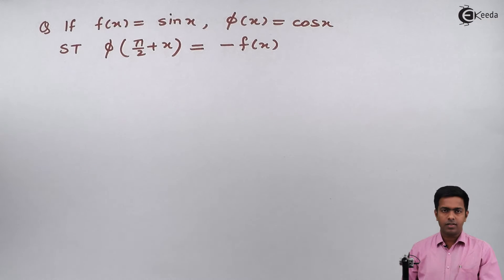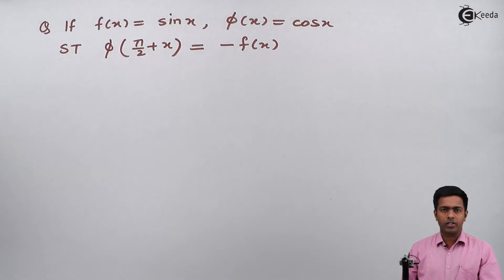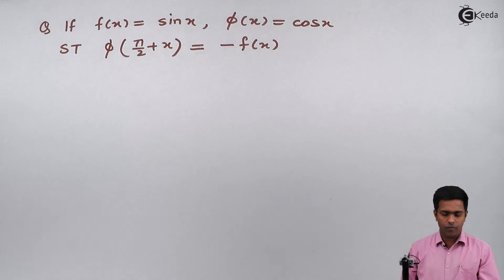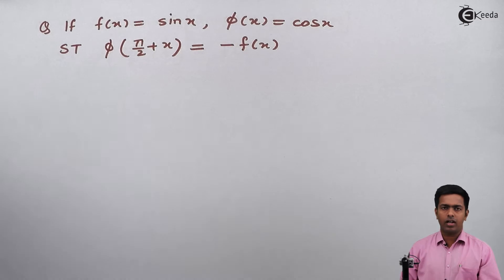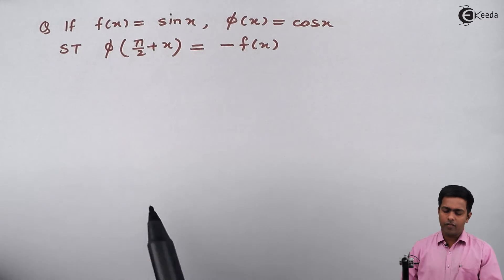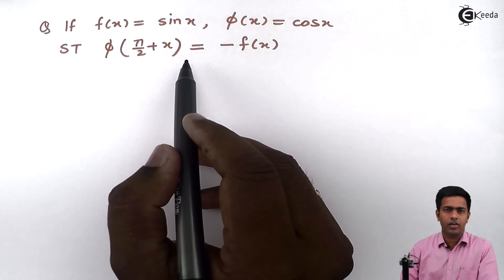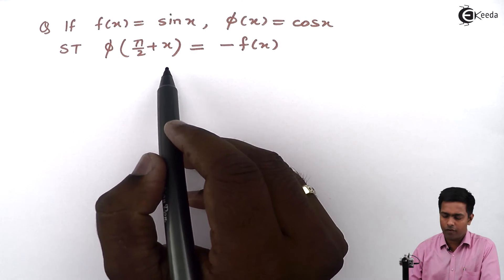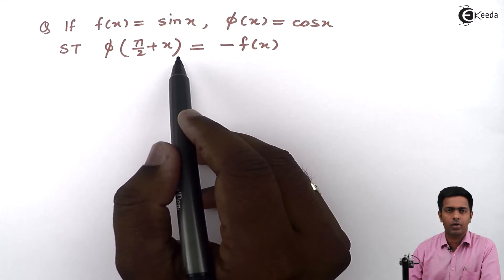So to prove this we have two functions. On the left hand side we have phi of pi by 2 plus x, and on the right hand side we have f of x. The value of f of x is already given. So I will start with the left hand side function and find out the value of phi of pi by 2 plus x.